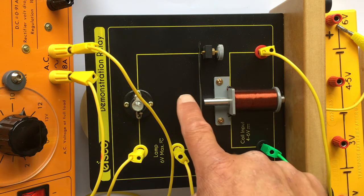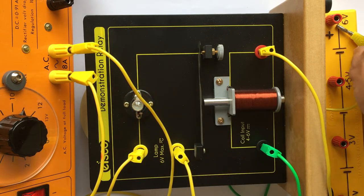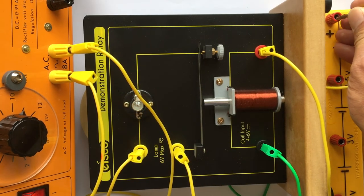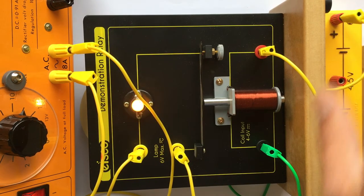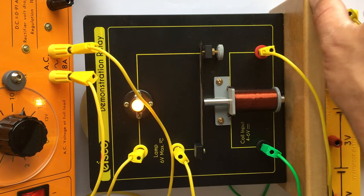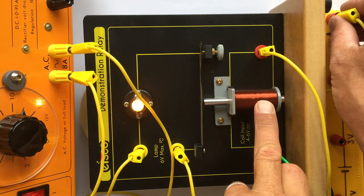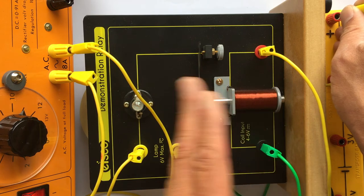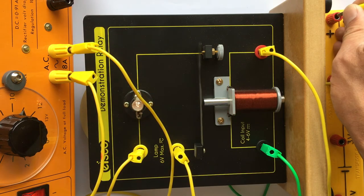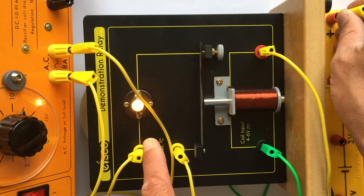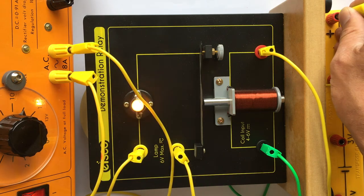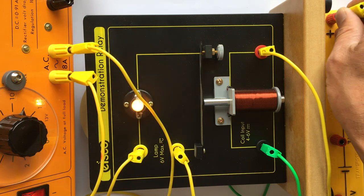So connecting my low voltage and you can see my high voltage works. So if I remove the current in this electromagnet, the electromagnet goes off and that armature opens again. That is a way of controlling a high voltage circuit using a low voltage circuit and that's called a relay.